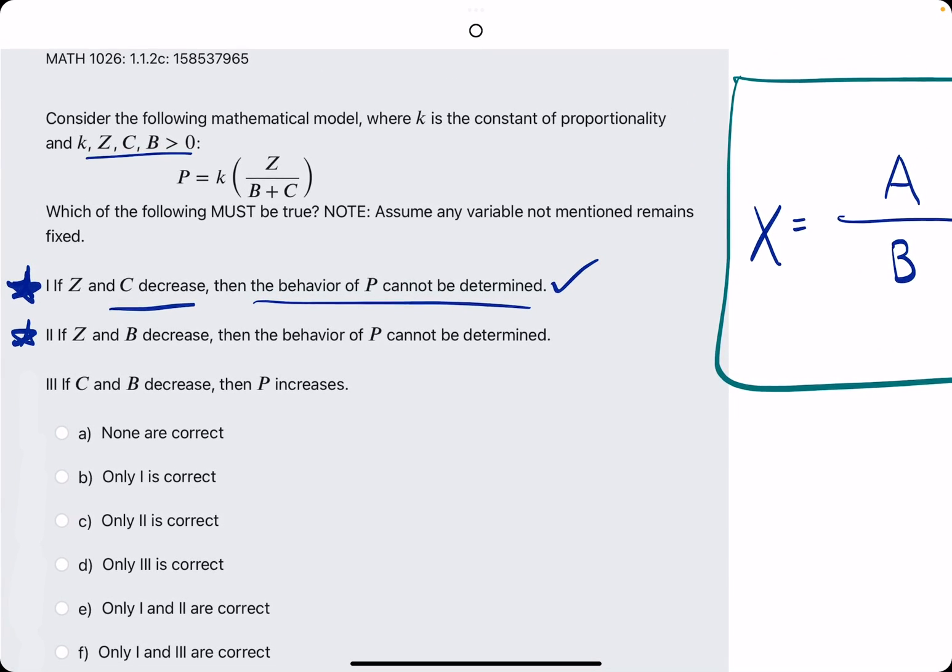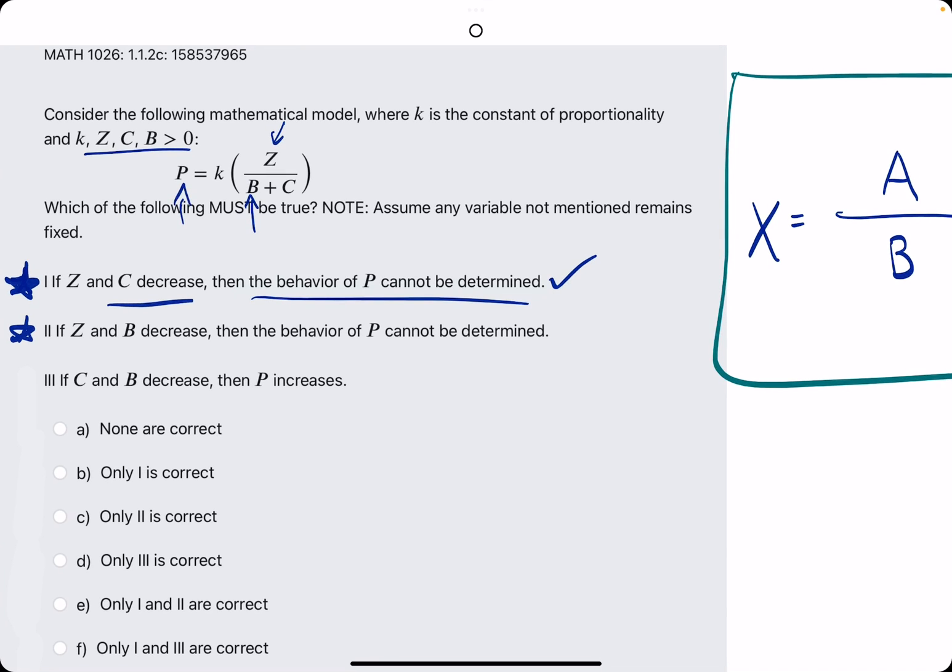Number two, if Z and B decrease, then the behavior of P cannot be determined. That's the same situation. So if the numerator decreases and the denominator also decreases, there's no telling how that will change P, unless we know exactly by how much they are decreasing. So that is also a true statement for the same reason.